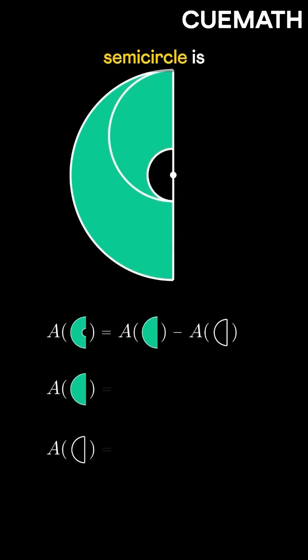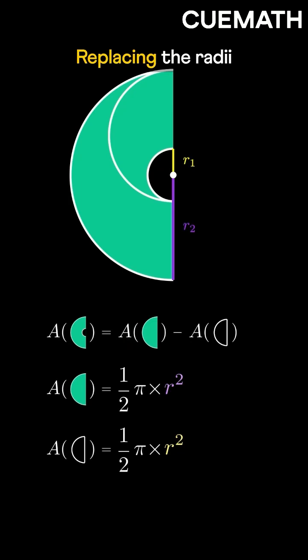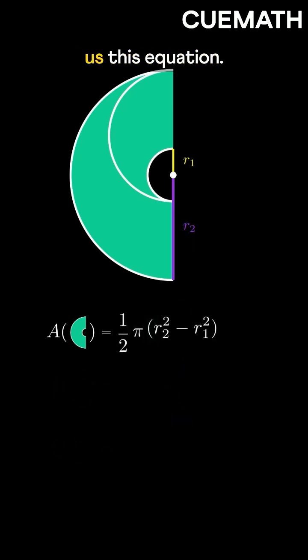The area of any semicircle is pi R squared by 2. Replacing the radii and simplifying gives us this equation.